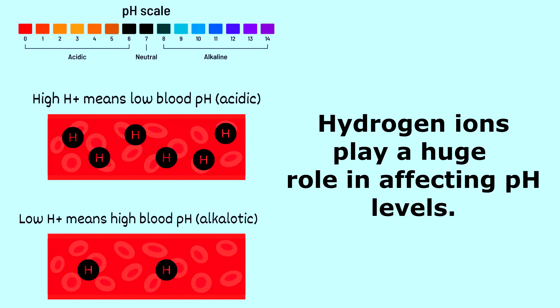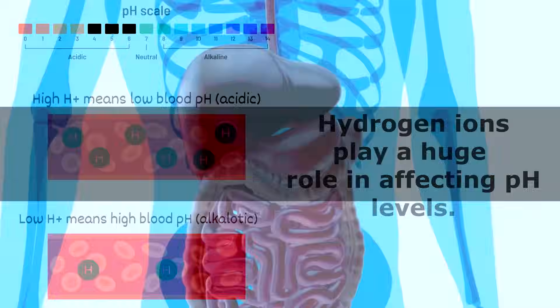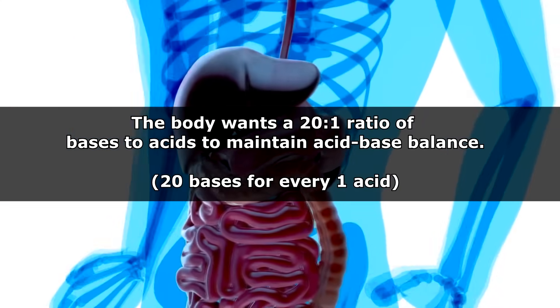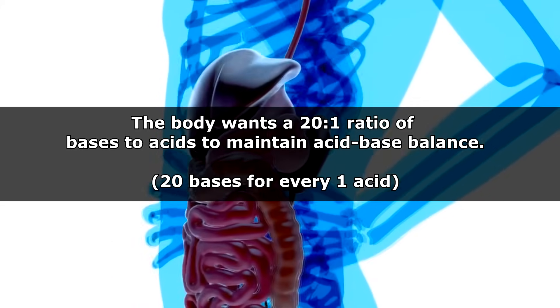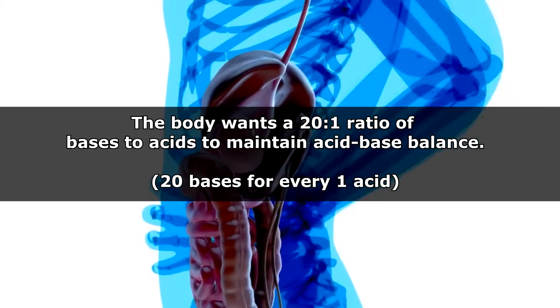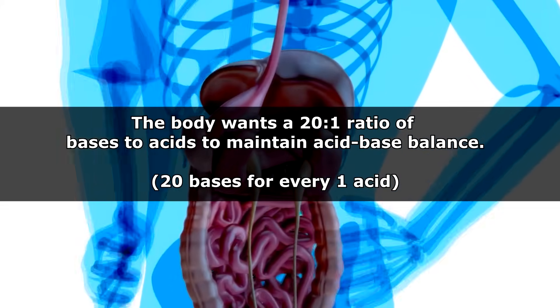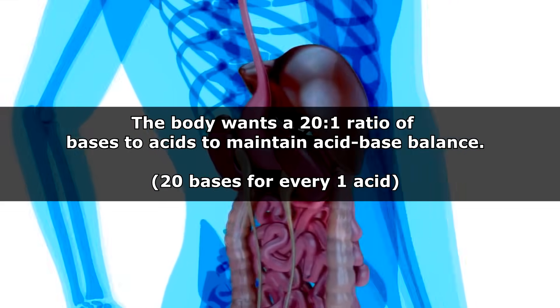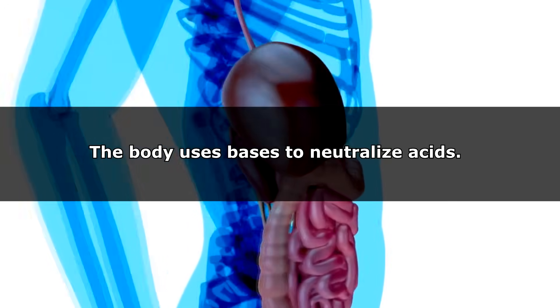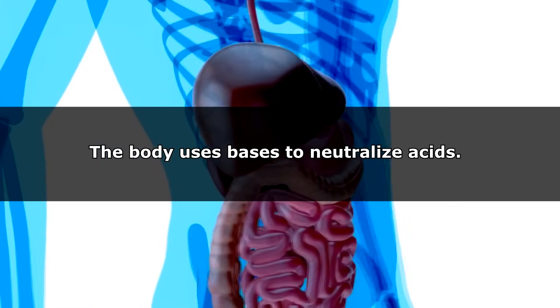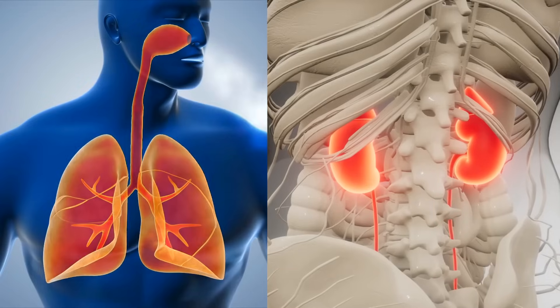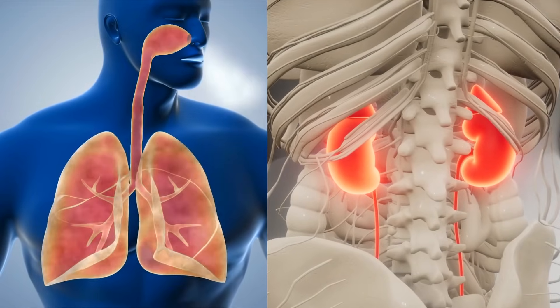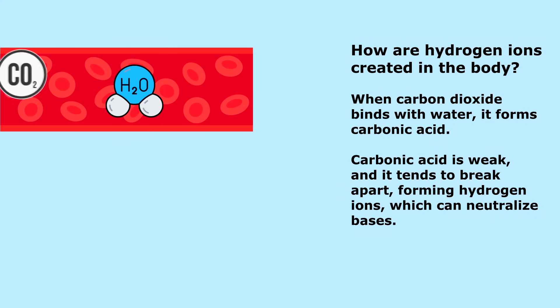Our body has systems in place to help balance this out. The body wants a 20 to 1 ratio of bases versus acids — for every 20 bases, it wants one acid — to keep the acid-base balance. The body uses systems to remove and neutralize these acids. Bases neutralize acids, and the body can use the respiratory and renal systems to help remove or conserve them.